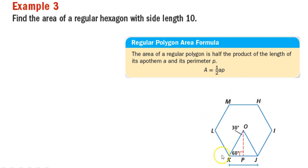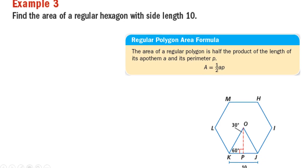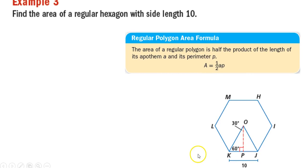So we have a regular hexagon right here. It's a hexagon, and the length from K to J is 10. So this length is 10, and we want to find the area of this figure.